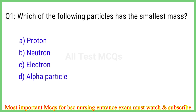Q1. Which of the following particles has the smallest mass? The right answer is option C: Electron.